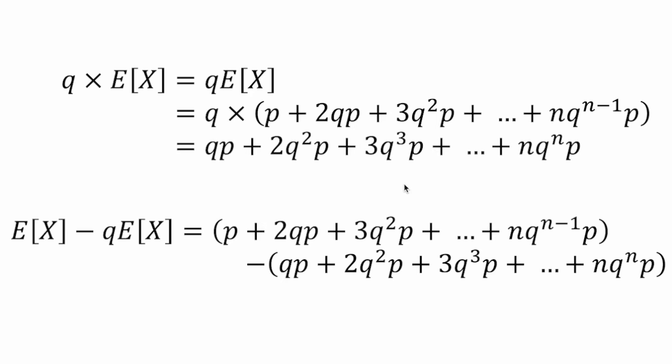So doing that, what do we have? We have just the, you know, our equation from before, minus the equation from above. And if you can see, so this P term, we can just put it here, and then these terms here, 2QP minus QP, it's just, we just get a QP, and then similarly, 3Q squared P minus 2Q squared P, we get Q squared P, and so on and so forth.